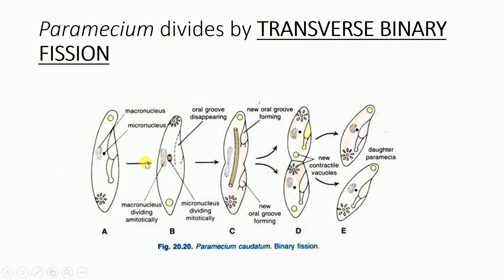The first step that actually happens is the division of the nuclei and the disappearance of the oral grooves. The organism is trying to divide, so it removes its focus from all other activities. The oral grooves and buccal structures start disappearing. The micronucleus divides mitotically while the macronucleus divides amitotically. In amitosis there is no spindle web formation — the nucleus simply elongates and gets constricted in the middle.